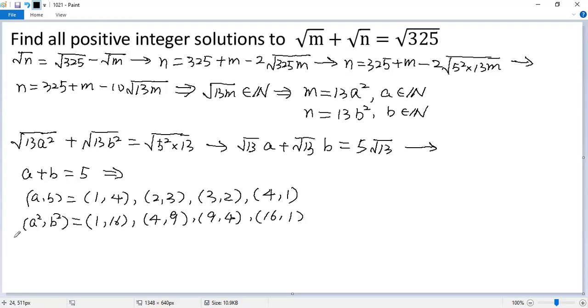So m and n should be 13 times a squared, 13 times b squared. So the possible values for m and n would be 13.